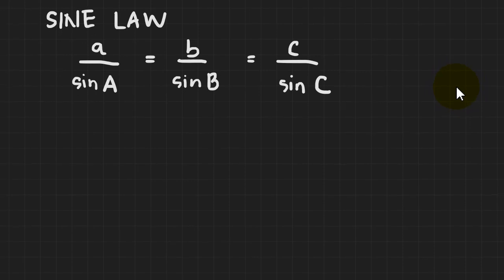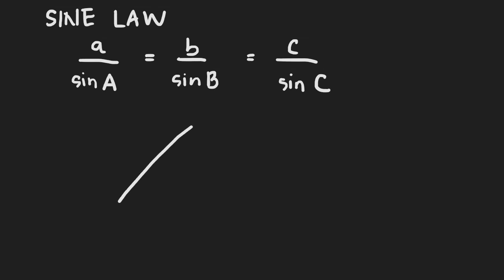If you have read the origin of the sine law, there is an oblique triangle with vertices A, B, and C in capital letters. Opposite vertex A is side small letter a, opposite B is side b, and opposite C is side c.